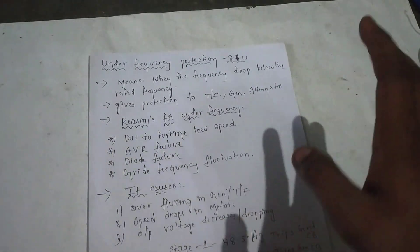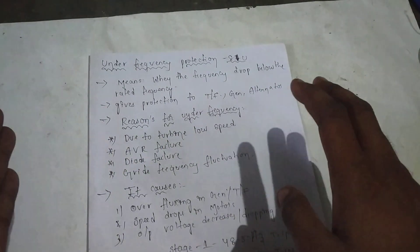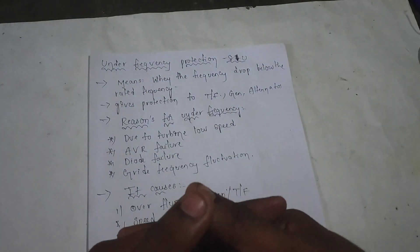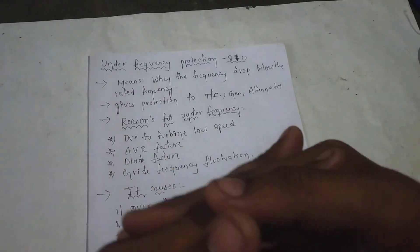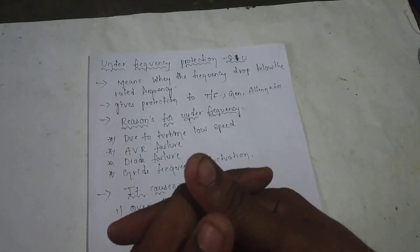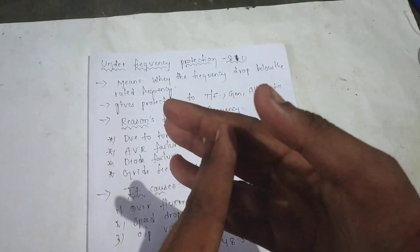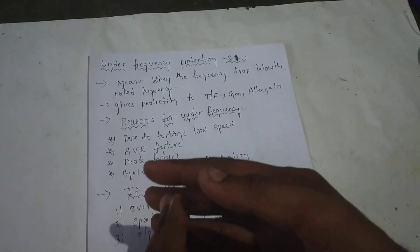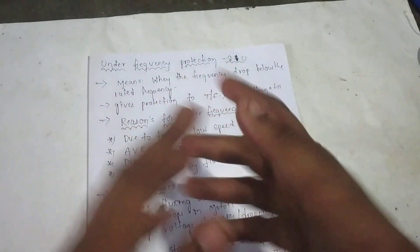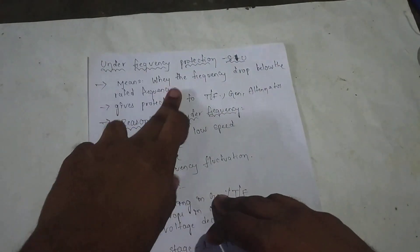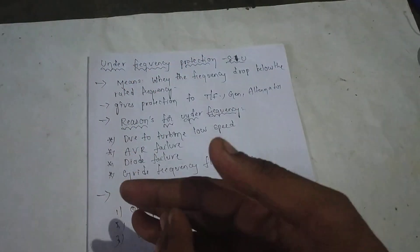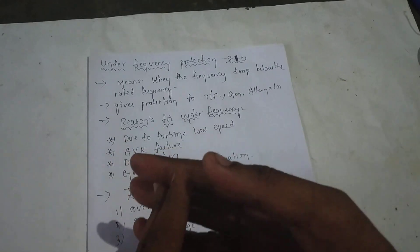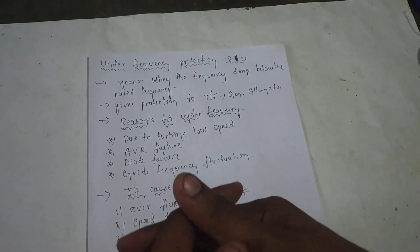Under Frequency Protection — suppose we have an Alternator running at the Indian rated frequency of 50Hz. If one of them is running at rated frequency but another is running under frequency, that is a concern for the Generator because it is running at low frequency. That is called Under Frequency.